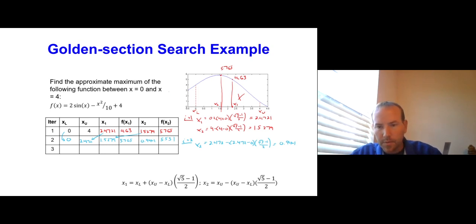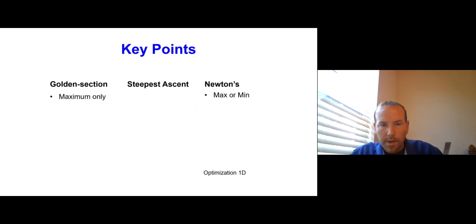What we've just done is we've stepped through two iterations of the golden section search. Hopefully, based on that, you can follow through more.